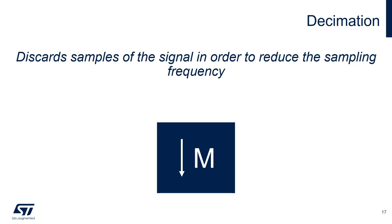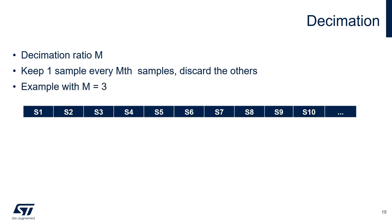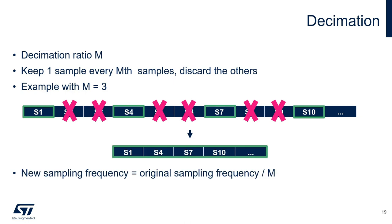The second operation to be performed is decimation. Decimation is the operation of discarding some of the samples of the signal in order to reduce the sampling frequency. The signal must be filtered properly beforehand in order to avoid any issues. A decimation ratio equal to M means keeping one sample every M samples and discarding the others. For example, given a hypothetical signal and using a decimation ratio equal to 3, we keep every third sample and eliminate the others. The resulting signal will have a sampling frequency equal to the original sampling frequency divided by the decimation ratio.